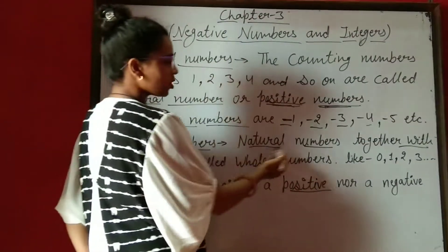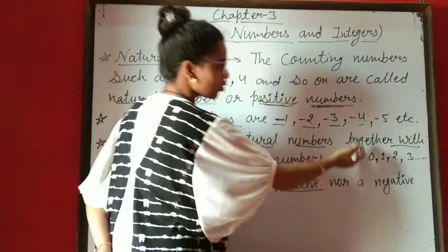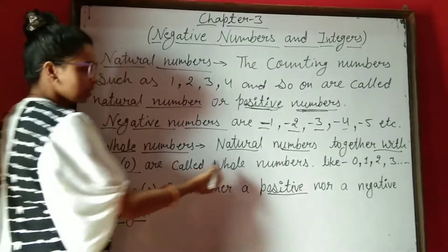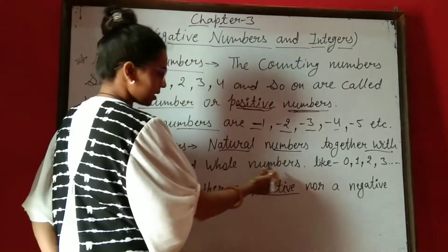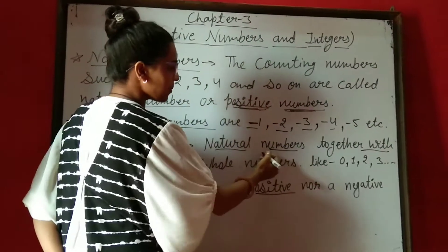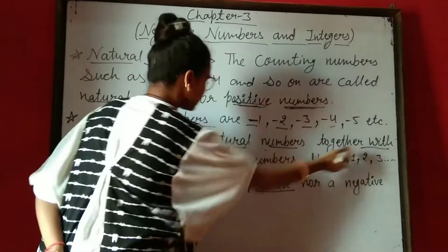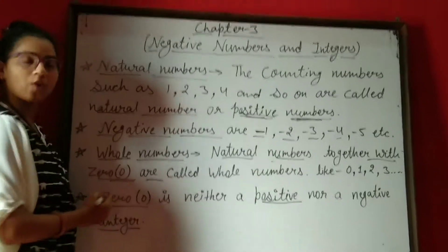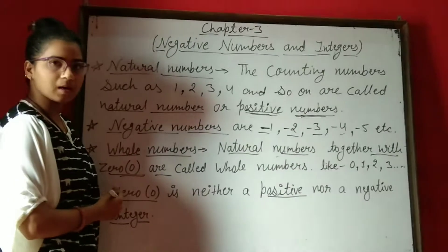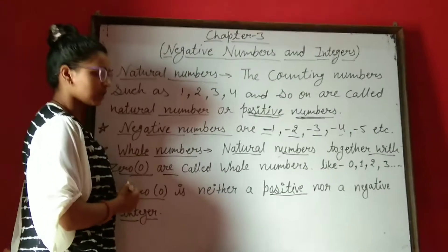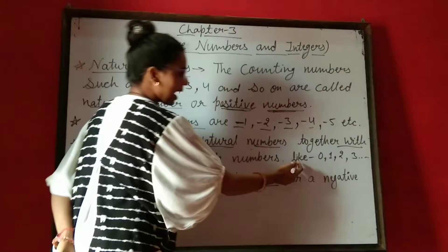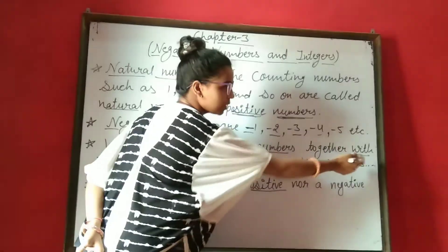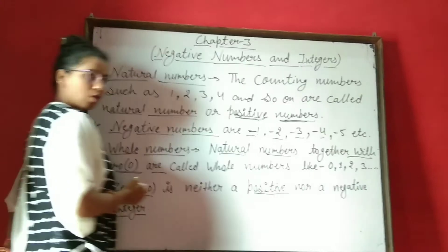Natural numbers together with zero are called whole numbers. Means जब आप natural numbers में zero भी include कर देते हो, तो वो आपके whole numbers बन जाते हैं — like 0, 1, 2, 3 and so on.